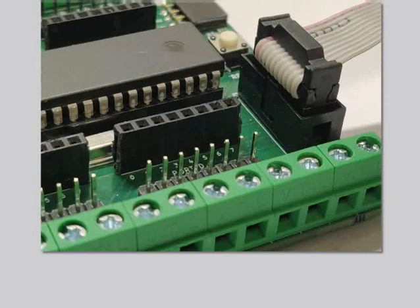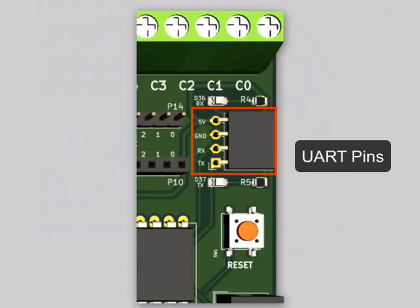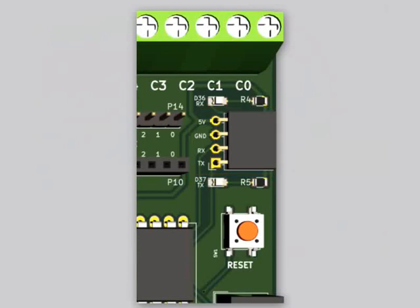The programmer shown in this tutorial is a USB ASP programmer. The UART pins along with 5V and ground are provided to attach an external UART module. The pin arrangements are shown in the picture. There are two status LEDs near the header to notify communication status.